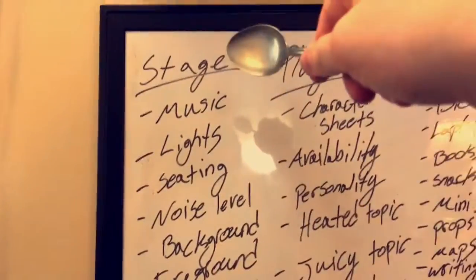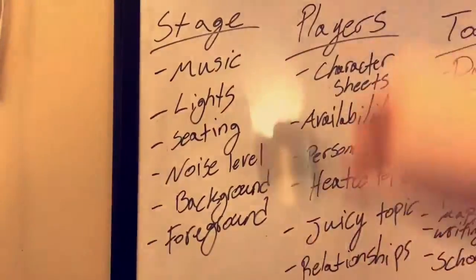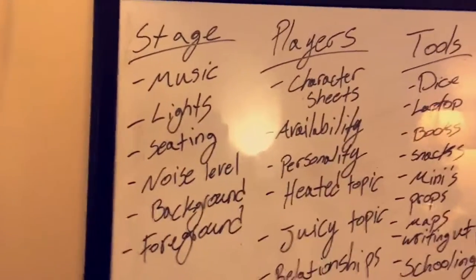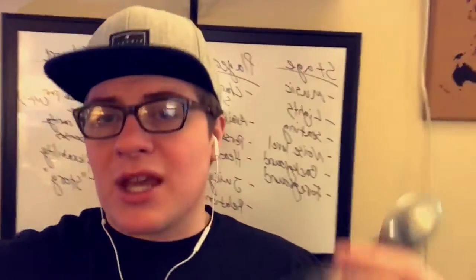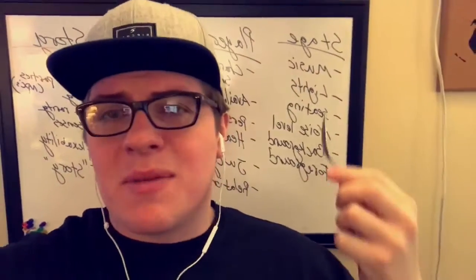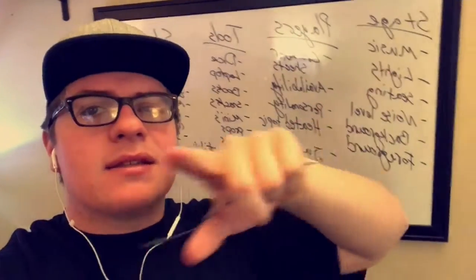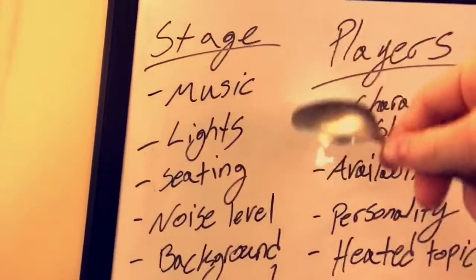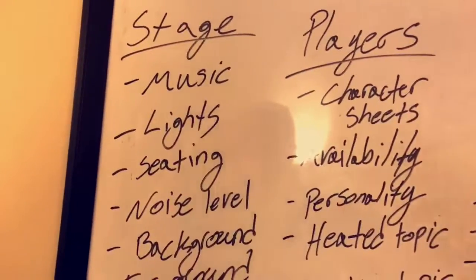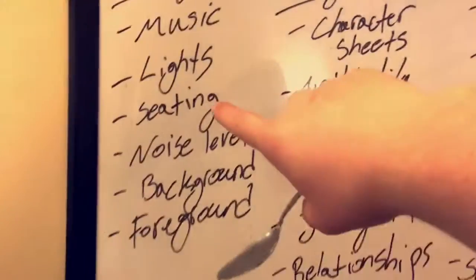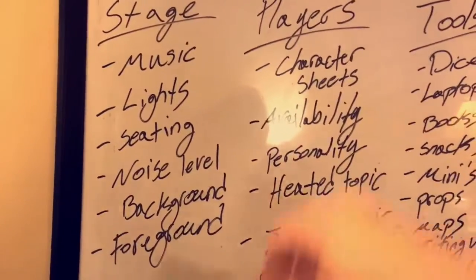Alright, so Stage — what does that look like? In this Stage category you've got music, light, seating, noise level, background, and foreground. Your stage is pretty much where you're playing — are you playing at your friend's house, are you playing at your house? Because then you have all these things that factor in: what music are you playing, what do the lights look like, how dim or bright is it, your seating — that's actually very important. After seating you've got noise level, background, and foreground.